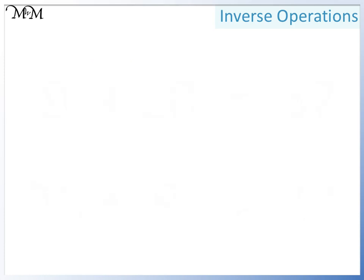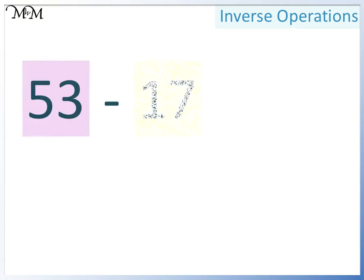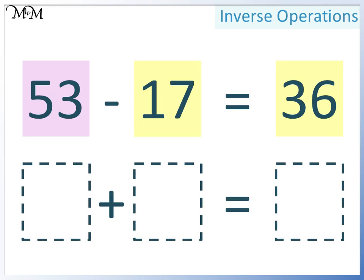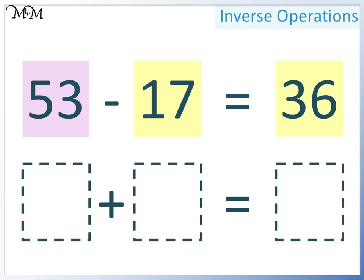Here's another example. 53 take away 17 equals 36. A larger number take away a smaller number equals another smaller number. We want to change this into two addition calculations. The numbers look trickier to calculate mentally, but we have been given the numbers from the subtraction, so we don't need to calculate anything. We just need to remember that in an addition, two smaller numbers add together to make a larger number.